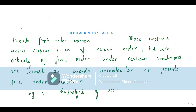What is a pseudo first order reaction? These are reactions which appear to be of a higher order — like a second order or third order reaction — but experiments have proven that they are actually first order reactions under certain conditions. These are called pseudo unimolecular or first order reactions.